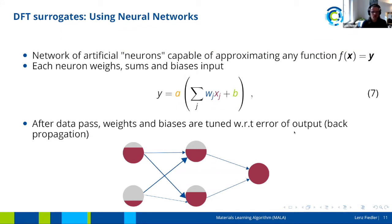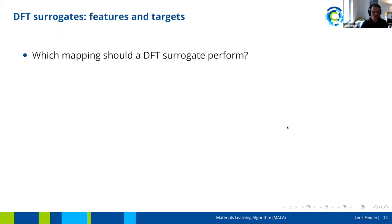By doing this, we eventually end up with a network that is able to perform any kind of approximation or mapping that we train it on. In the context of this presentation, you can think of a neural network as a way to approximate a function or learn a certain mapping. Now the question is: which mapping should such a DFT surrogate perform?